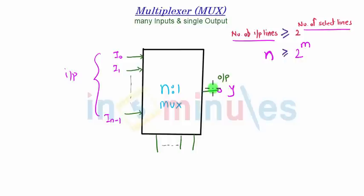While select lines are m, so I'm starting from 0, so select lines s₀, s₁, all the way to s of m minus 1. So 0 to m minus 1, that will be m select lines.